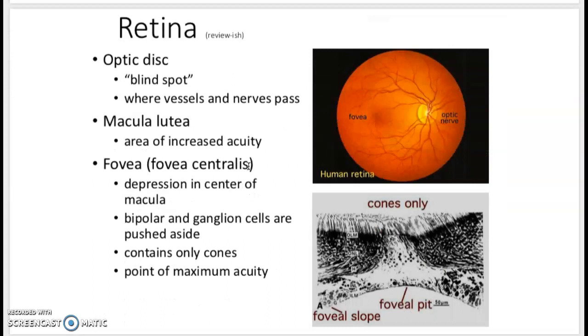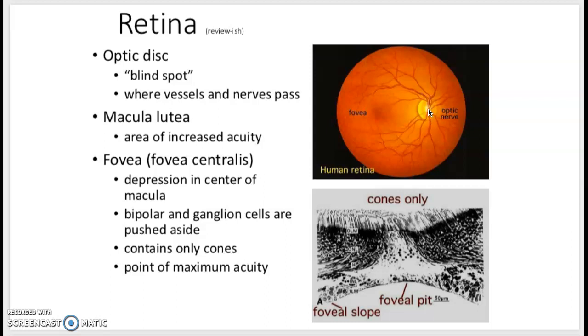So just to review, the optic nerve comes out of the back of the eye. The part right where it starts is called the optic disc, or the blind spot. This is where the blood vessels and nerve exit the eye. Macula lutea is the area of increased acuity or discrimination. And then the fovea, or fovea centralis, is a little portion that has only cones, and this is where you have maximum acuity or maximum discrimination to give you the best vision possible.